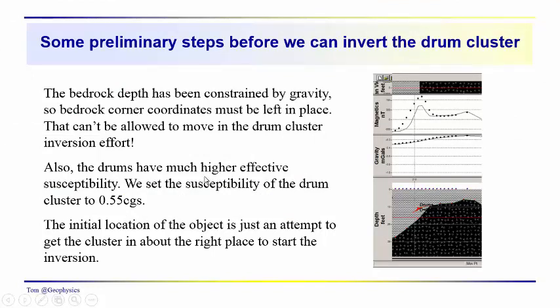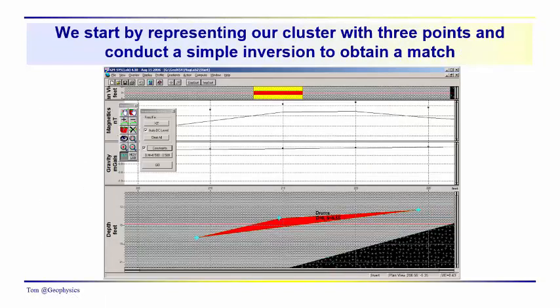Also, when we put the drums in there, they have a much higher susceptibility than the basaltic bedrock. They're about 0.55 CGS. We have to define their extent in and out of the section. And this initial drum cluster here is just a crude attempt to get it in the right place.